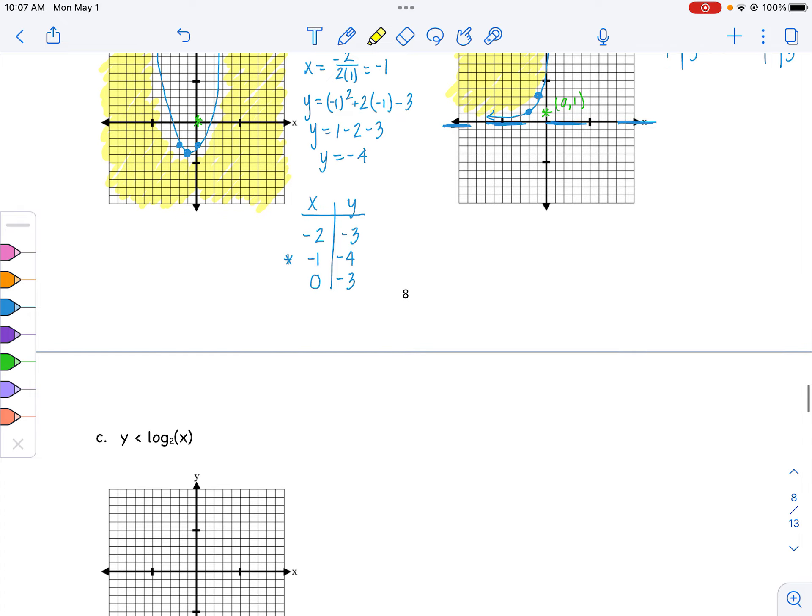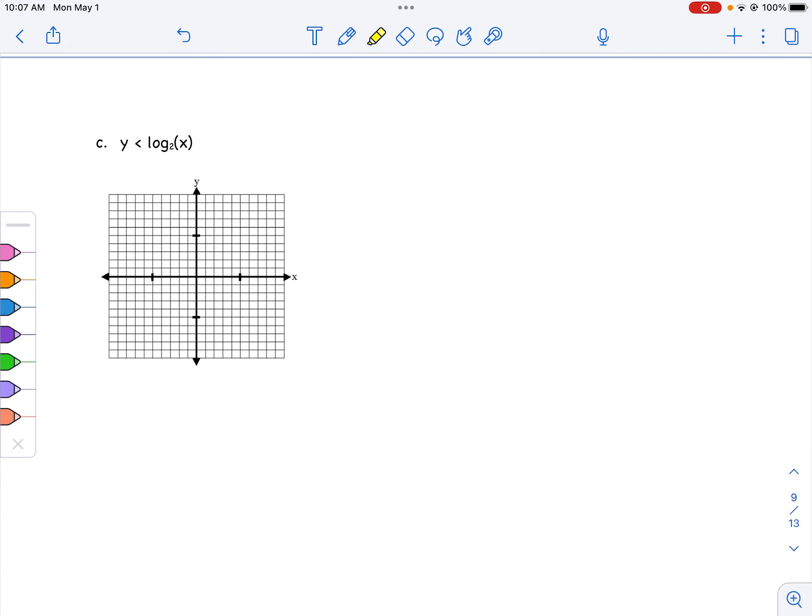Last one we have is a log. Right away I notice it's y is less than, so it's going to be a dashed line that's not equal to. And now I need to graph the log. With logs we have two points: 1, 0 and 2, 1. And we're not moving up or down any, this is just the graph. So I'm going to graph those two: 1, 0 and 2, 1. I know it's a dashed line. I'm going to have my asymptote there as well, and then I have my dashed curve making it look like a log.